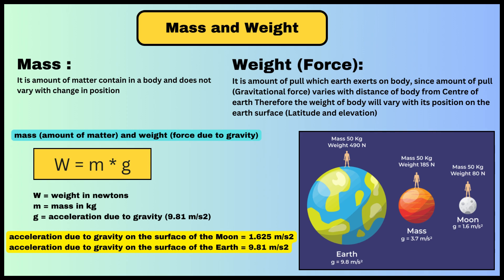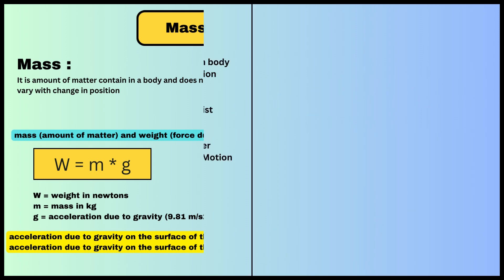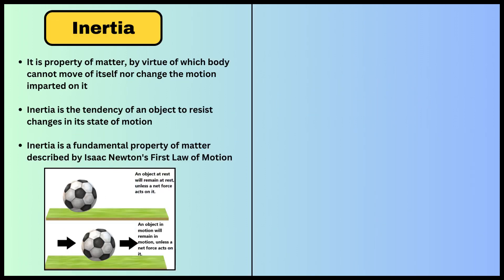The relation between mass and weight is W = m × g, where g is the acceleration due to gravity.